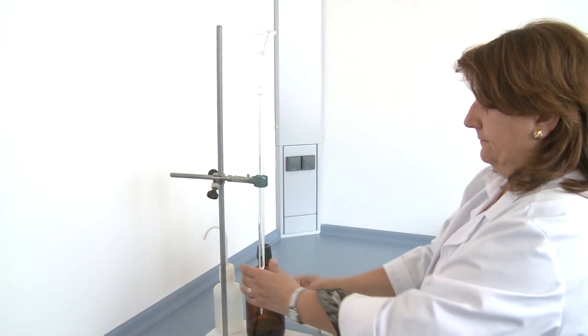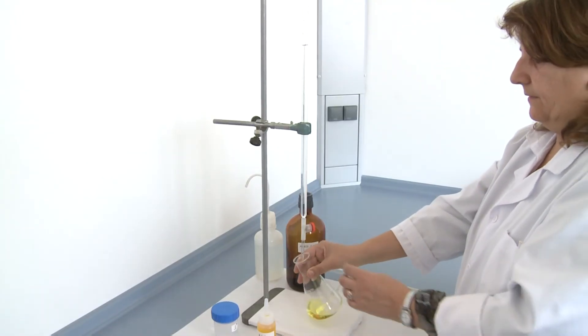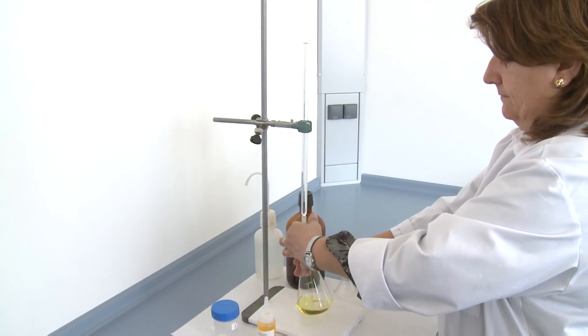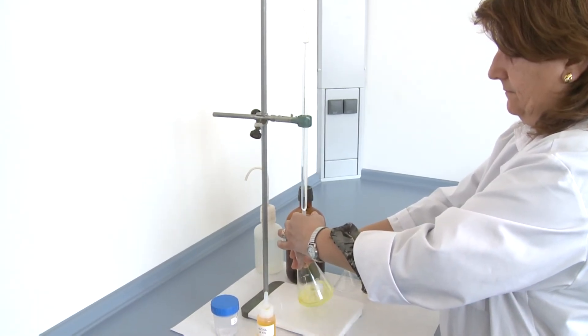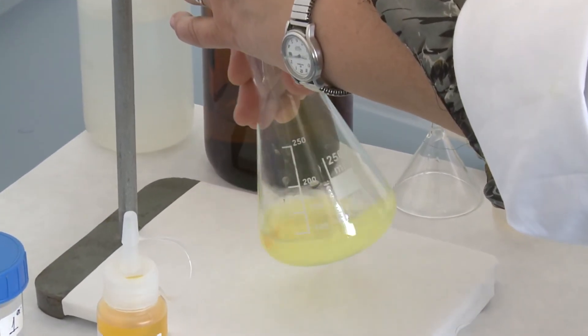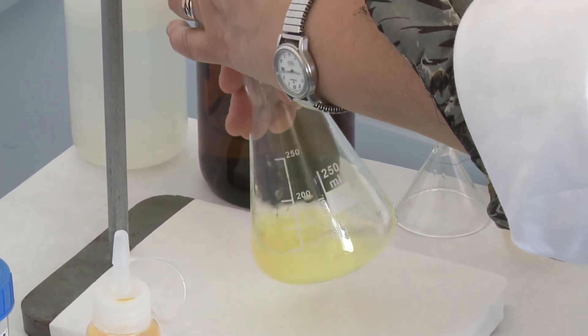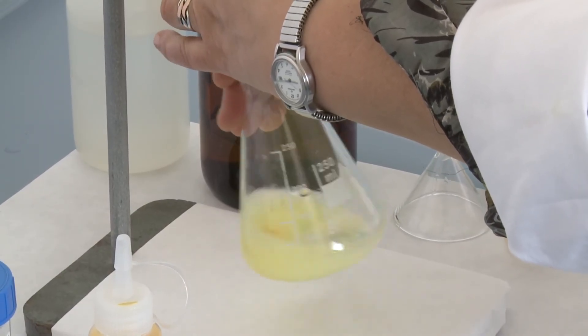Then proceed to make up to zero of the burette with silver nitrate solution. Then you start to titrate with silver nitrate in this solution drop by drop while stirring continuously the Erlenmeyer flask, until a precipitate of pinkish red appears, which indicates that it has reached the end of the assessment.